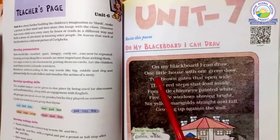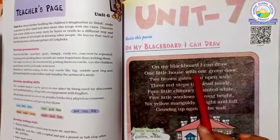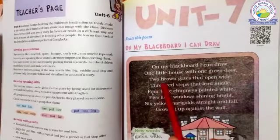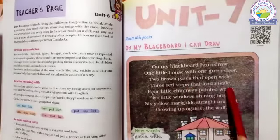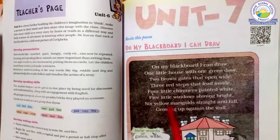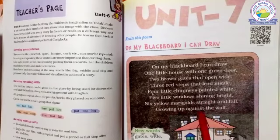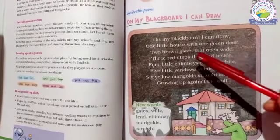Let's start. On my blackboard I can draw one little house with one green door. Two brown gates that open wide. Three red steps that lead inside. Four little chimneys painted white. Five little windows shining bright. Six yellow marigolds straight and tall, growing up against the wall.